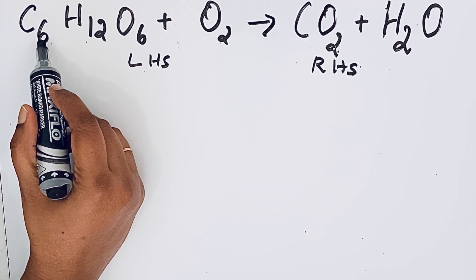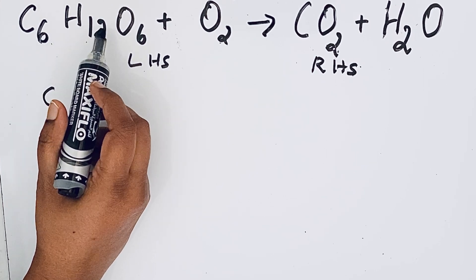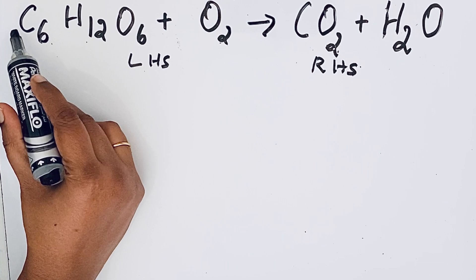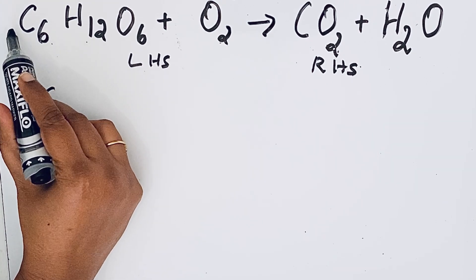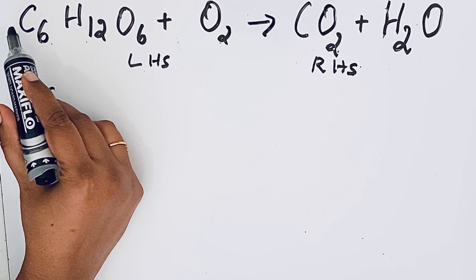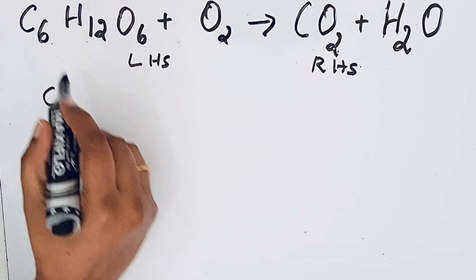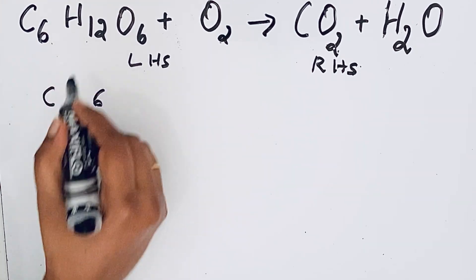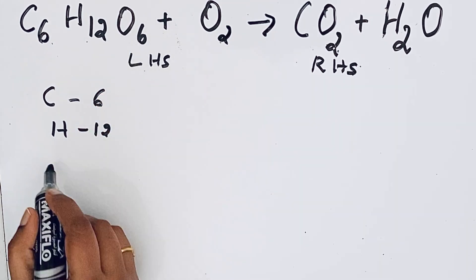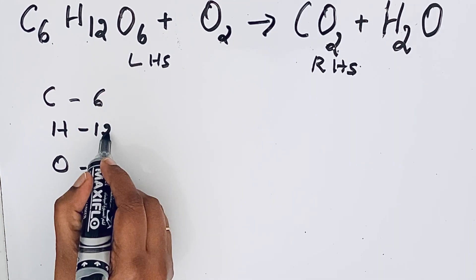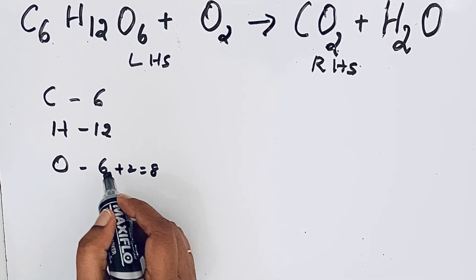This tells about the number of atoms of an element. Coefficient is the number which is written just before the chemical formula of a compound or molecule. Here nothing is written, which means there is one molecule of glucose present. So number of atoms of carbon is 6, hydrogen we have 12 hydrogen atoms. Then for oxygen, we can see here 6 and here 2, so 6 plus 2, 8 oxygen atoms.